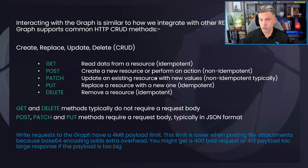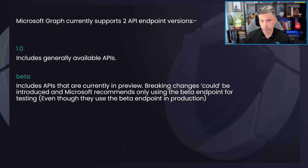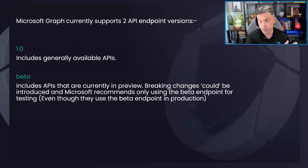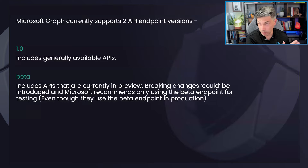Those CRUD methods are the common language we use to speak to an API. We also need to talk about the endpoint. A developer might have a version 1 publicly supported endpoint and a beta endpoint for testing — this is exactly what the Microsoft Graph API has. Version 1 includes the generally available APIs for Microsoft. Those APIs will not change or break; there'll be no deprecation without advance notice from Microsoft.